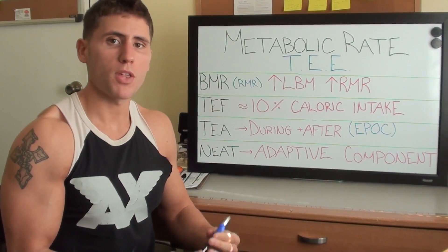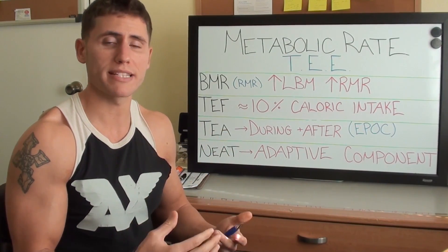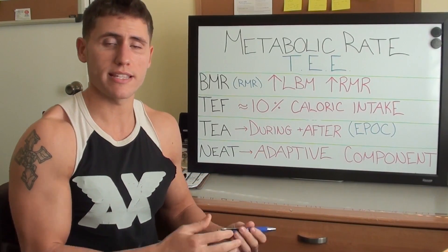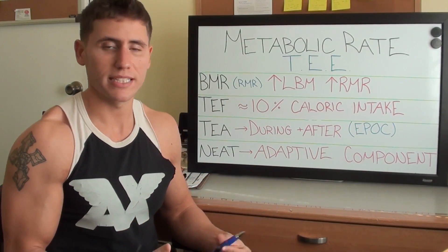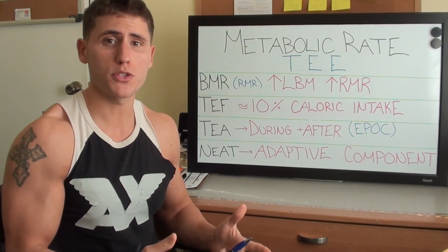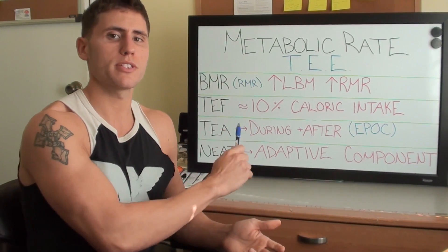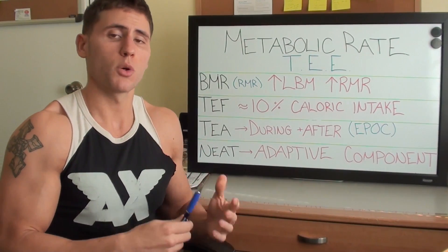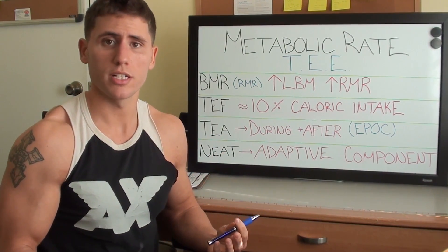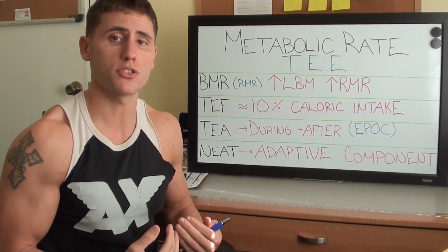Next up we have TEF — the thermic effect of food, or thermic effect of feeding. Every time you ingest food, your body has to break down, utilize, and metabolize those nutrients, which requires energy. The 10% number you see — 10% of caloric intake — is an estimate commonly used, though the number varies and is never 100% accurate because each macronutrient has a different thermic effect. Protein is higher than fat, and fiber also plays into it. So if you're eating 2,000 calories per day, 10% of that would be 200 calories — meaning your body requires 200 calories just to break down your nutrients. You're actually burning calories when you consume calories.